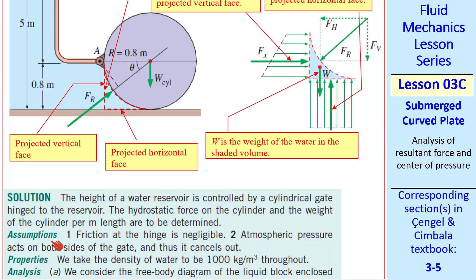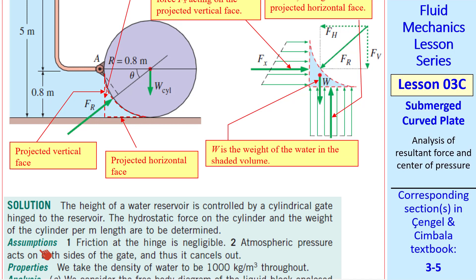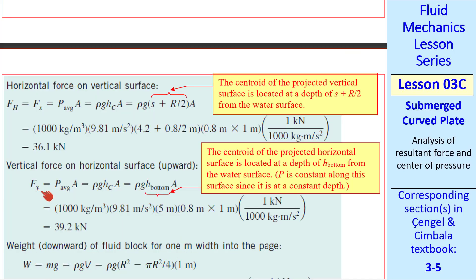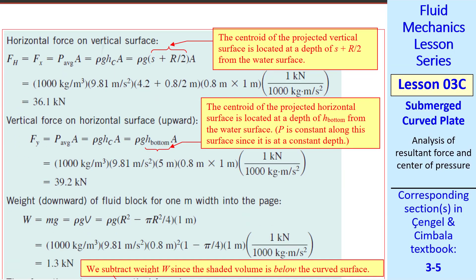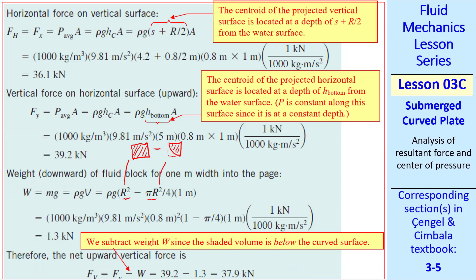For the vertical force, our projected area is at the full depth of the dam — 5 meters. Since it's horizontal, the pressure is constant all along that projected area, so the vertical force acting upward is just rho·g·h_bottom·A, where h_bottom = 5 m. We get 39.2 kN. We also need to calculate the weight of this little chunk of water. If you complete a square of dimensions r, the area of the water chunk is the square area minus the quarter-circle area: r² − π·r²/4. The weight is rho·g times this area times the 1 m unit length into the page, giving 1.3 kN.